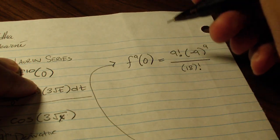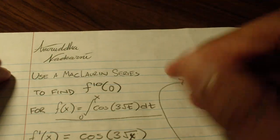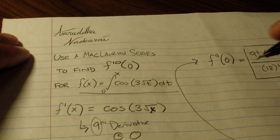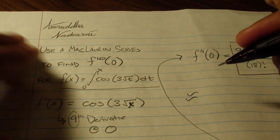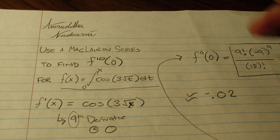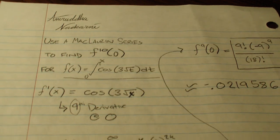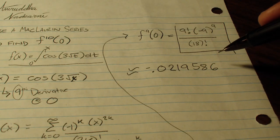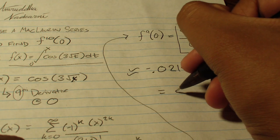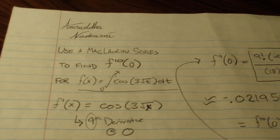This is our exact value for the 10th derivative at 0 for our initial function. The approximate value can be evaluated as negative 0.0219586. Both are equal to the 10th derivative at 0 for the initial function. Thank you.